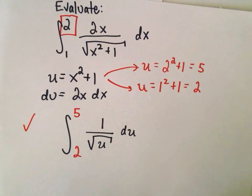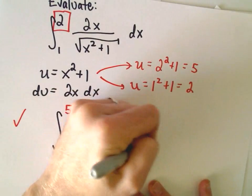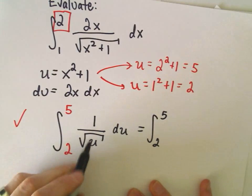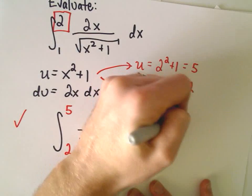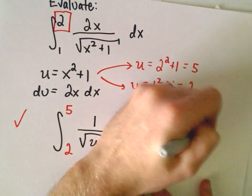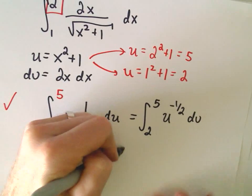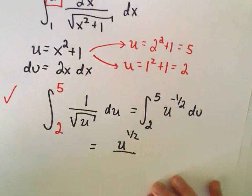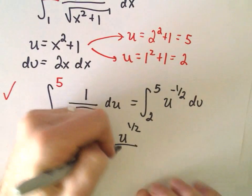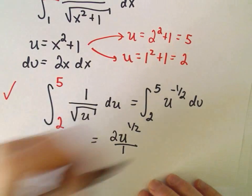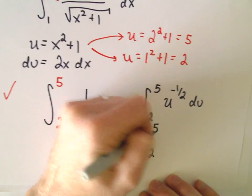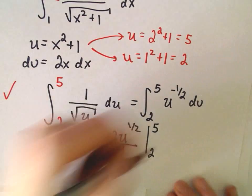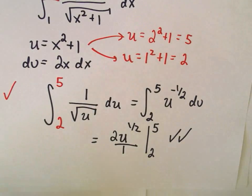So this is absolutely perfectly correct. So we would integrate from 2 to 5. This is u to the 1 half. I would rewrite that as u to the negative 1 half. And if we integrate, we would get u to the 1 half. We would divide by 1 half, which would be the same thing as multiplying by 2 over 1, from 2 to 5. And this is perfect. No problems here.